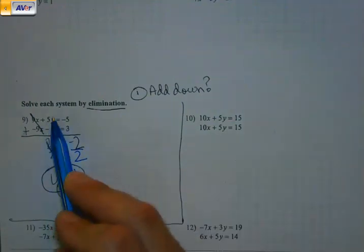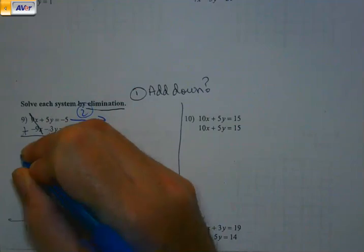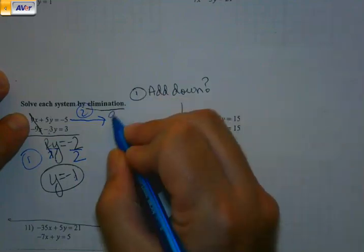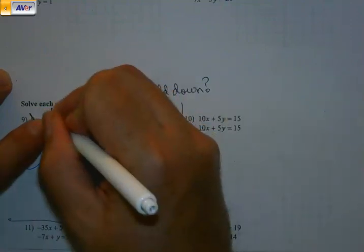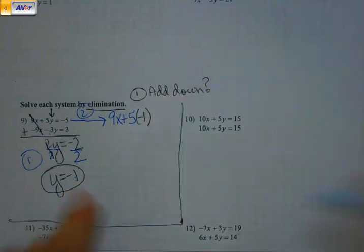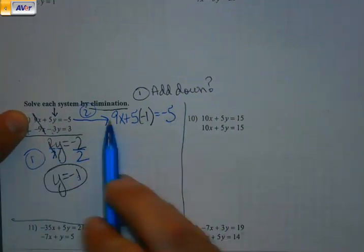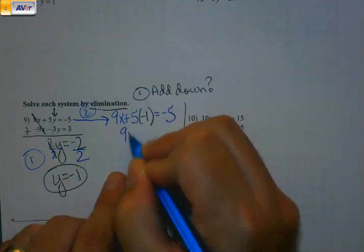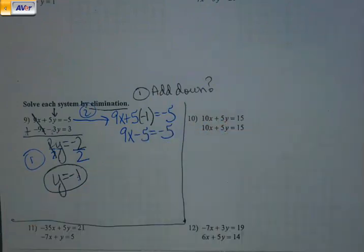You can pick either equation. I'm just going to use the top one. I'm going to start writing this until I get to y, because now I'm going to have a value for that. So 9x plus 5, I'm going to substitute the y with the y value that I just found. Same thing, except I substituted negative 1 in for y. And now I'm going to solve that equation.